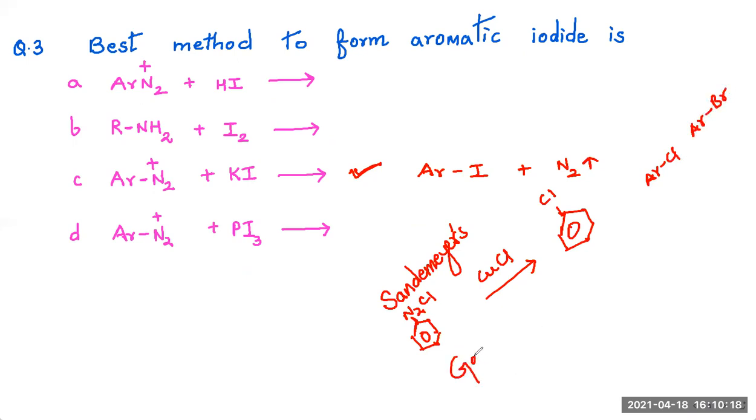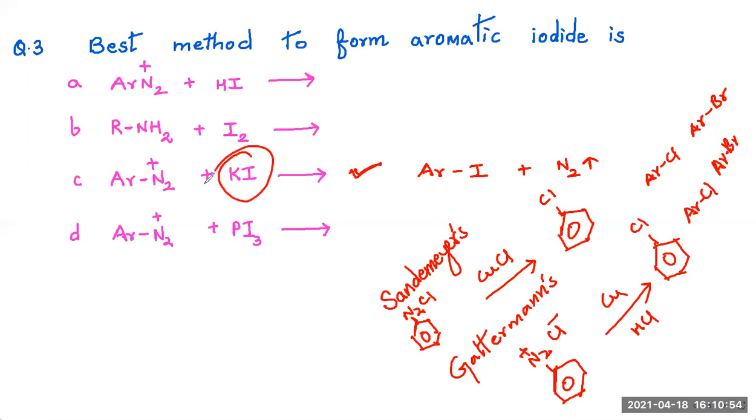Now if you remember Gattermann's reaction, then in Gattermann's reaction we took same benzene diazonium chloride and we treat it with copper powder in HCl and we get chlorobenzene. Here we can get aryl chloride as well as aryl bromide but we can't get aryl iodide. So aryl iodide was obtained by treating the benzene diazonium salt with KI. Keep it in your mind, it is obtained by treating it with KI.